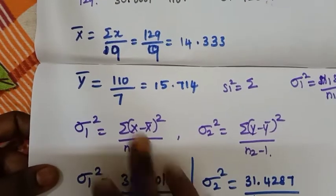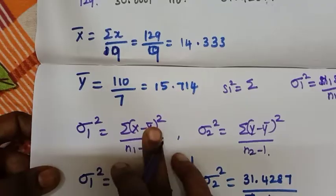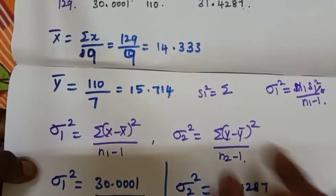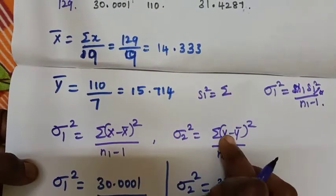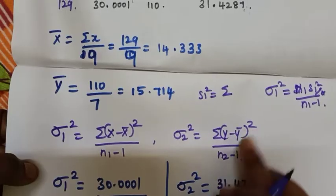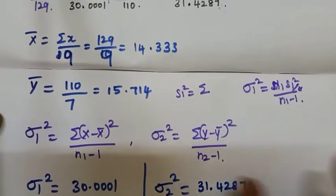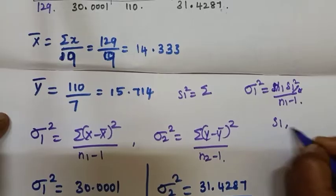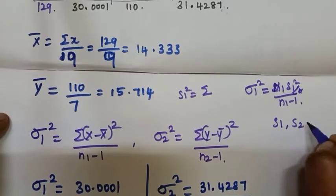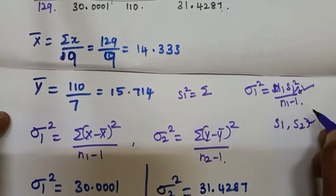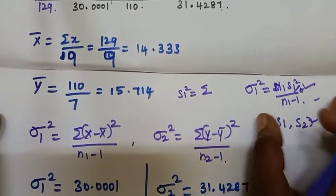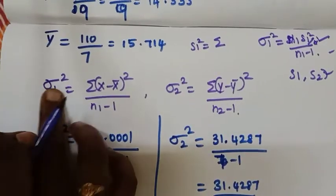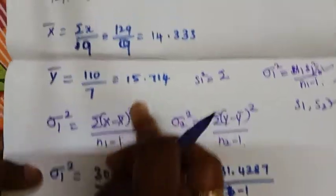The formula is: sigma1 squared equals summation of (x minus x-bar) squared divided by n1 minus 1. Sigma2 squared equals summation of (y minus y-bar) squared divided by n2 minus 1. Suppose these samples are S1 and S2 — we will use this formula. So now sigma1 squared and sigma2 squared.